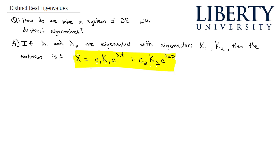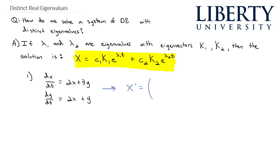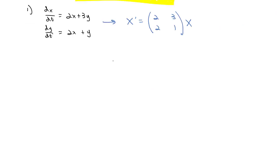Now we just have vectors to represent all the different equations we're balancing at the same time. For example, if we have dx/dt equals 2x plus 3y and dy/dt equals 2x plus y, we can write this system as X' equals the coefficient matrix [2, 3; 2, 1] times the solution matrix X. The coefficient matrix is what we use to find our eigenvalues and eigenvectors.